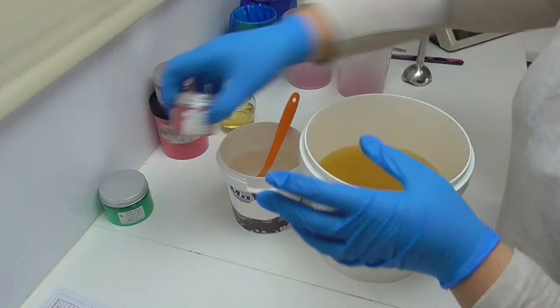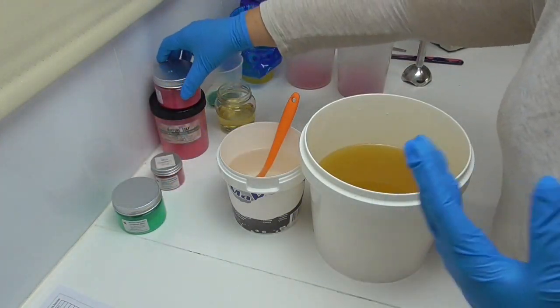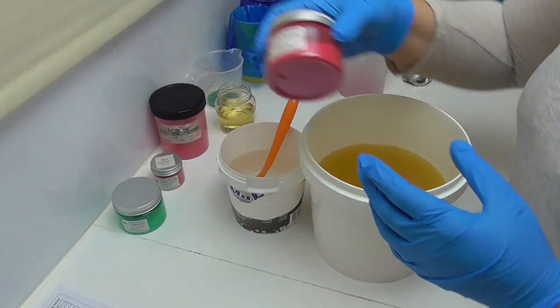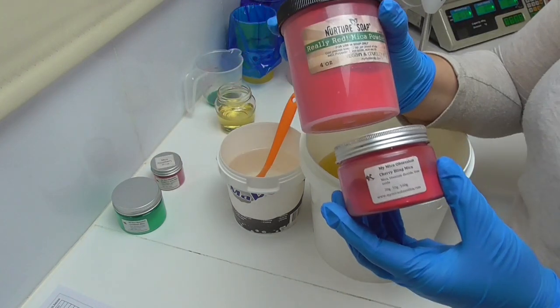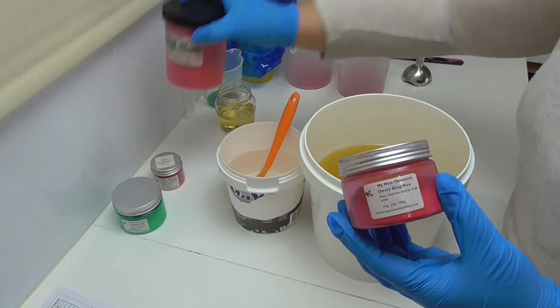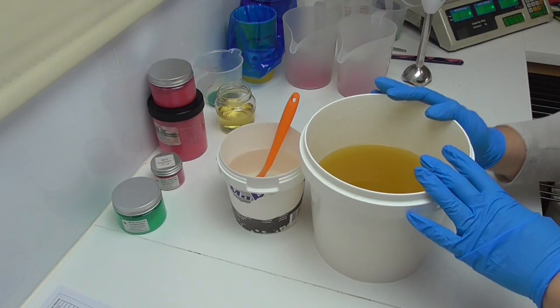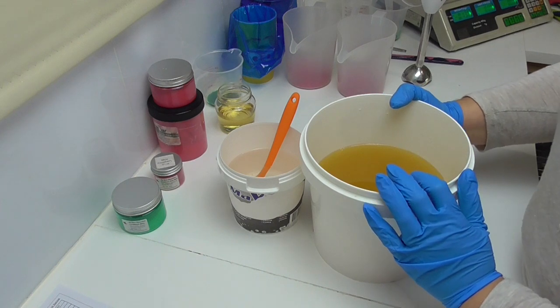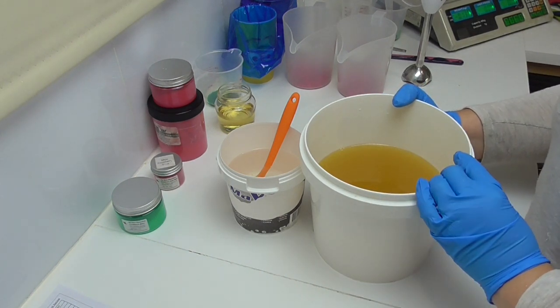I'm also going to do some other colors including a little bit of Raspberry Soda, a little bit of Caribbean Blue, both from Mica Obsession, along with some Cherry Bling mixed with a tiny bit of Nurture Soap Really Red mica. I'll do a little bit of a drop swirl or an in-the-pot swirl. For the top of this soap I have some raspberry embeds and I'm going to do a little bit of piping as well.